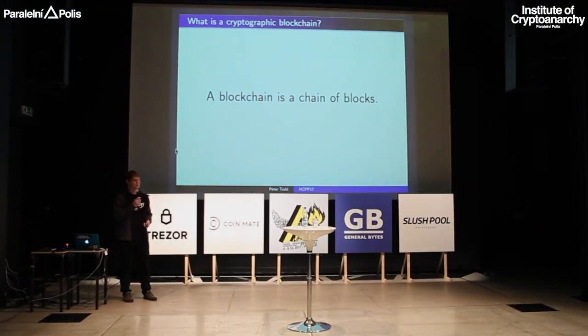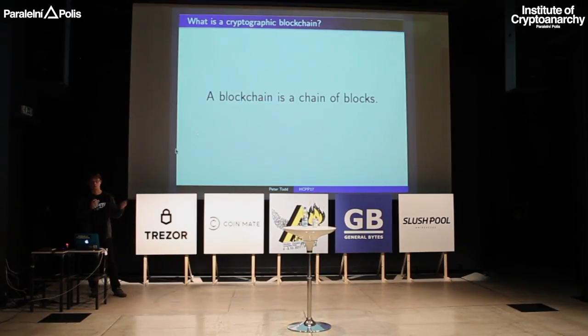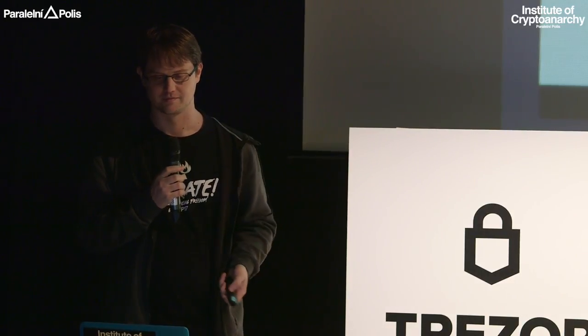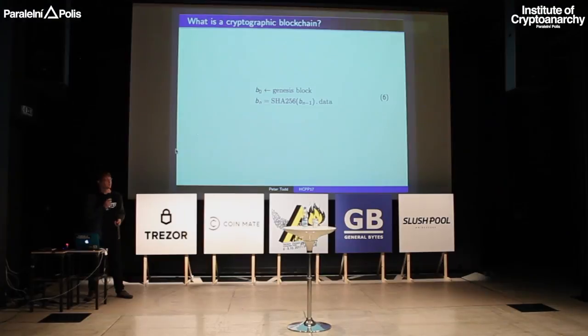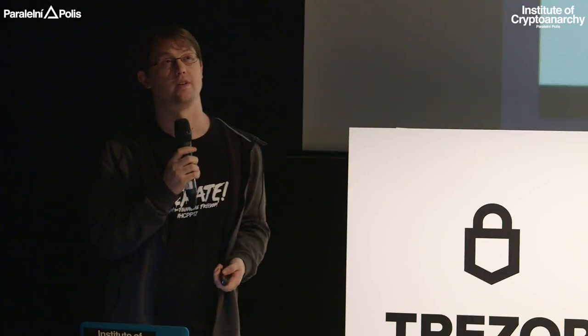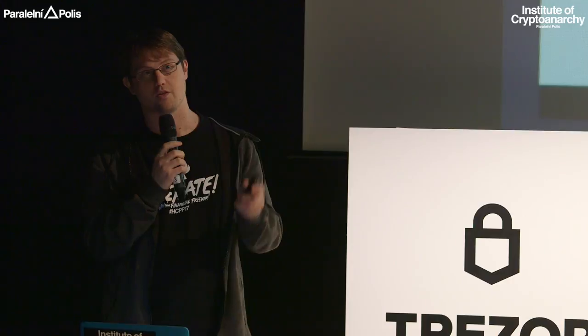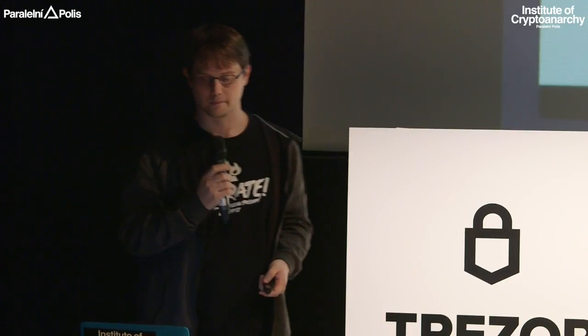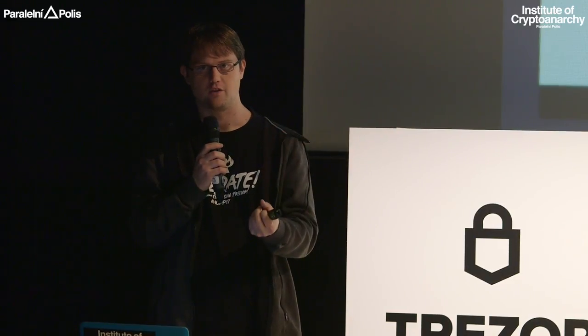So what about a blockchain? A cryptographic blockchain is a chain of blocks. We have block zero, the genesis block — which I think quotes something on the verge of bailout for the banks. For every block after it, we take the SHA-256 of the previous block and concatenate that with our actual data.